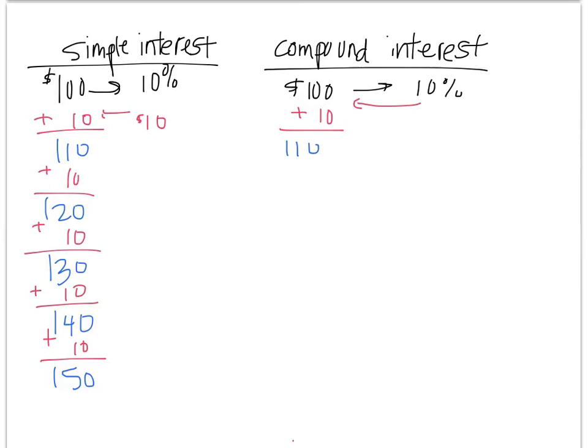Then the next year, the bank recognizes that you have $110. The bank doesn't calculate your interest based on the original amount. It bases it on what you currently have in the bank. So your 10% is actually $11 because you're getting 10% of $110. And so now you have $121. So big whoop, one more dollar.